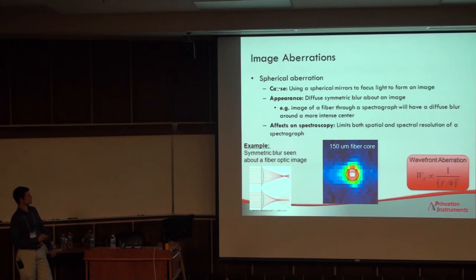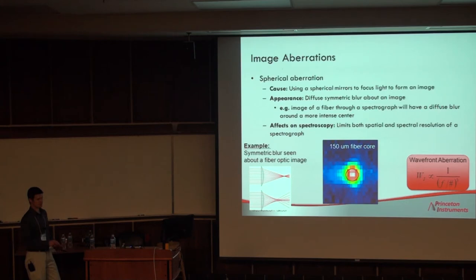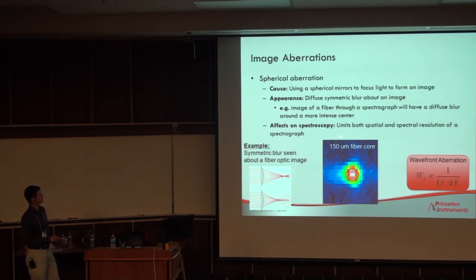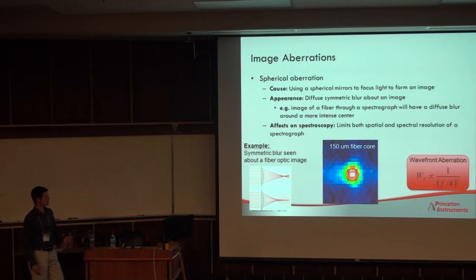Spherical aberration, shown here through a ray trace, is caused by the use of a spherical mirror or lens to form an image. It appears as a radial blur about the imaged object — in this case a 150-micron core fiber gets blurred out to a 180 to 200-micron image. Its effects on spectroscopy limit both spatial and spectral resolution in the instrument. It also goes as one over the F-number cubed, so the shorter the focal length, this effect increases rapidly.